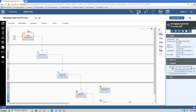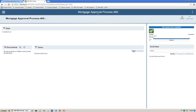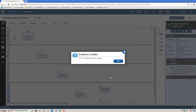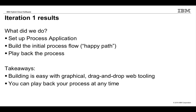Let's take a snapshot of what we've built so far. Snapshots are IBM BPM's built-in version mechanism — you can go back to this snapshot at any time in the future. Iteration 1 is complete. To review: we set up our process application, we built the initial process flow, and we played back the process. A couple of takeaways: you can see that building is very easy using graphical tools and just a web browser, and you can play back your process at any time.